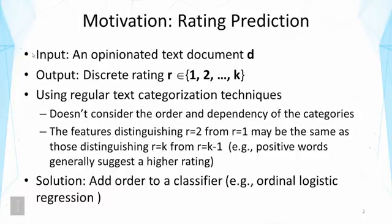Intuitively, the features that can distinguish rating two from one may be similar to those that can distinguish k from k-minus-one. For example, positive words generally suggest a higher rating. When we train a categorization model by treating these categories as independent, we would not capture this. The solution is to add order to the classifier, and there are many different approaches.